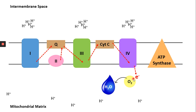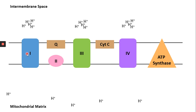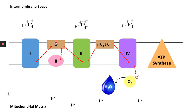To summarize the electron pathway: electrons from NADH pass to protein complex 1, and electrons from FADH2 pass to protein complex 2. Then electrons from both complexes transfer to Q, then to protein complex 3, then to CYTC, then to protein complex 4, and finally to the terminal electron acceptor — oxygen. Oxygen receives the electron, becomes reduced, and forms water.